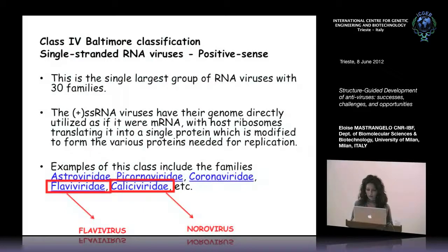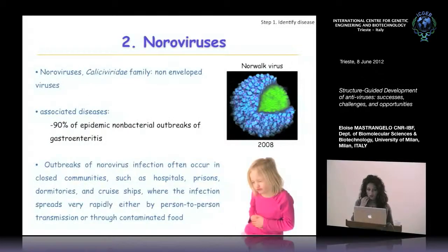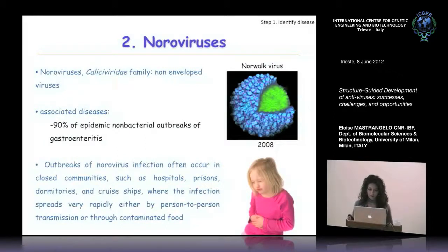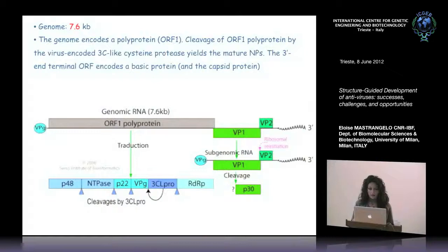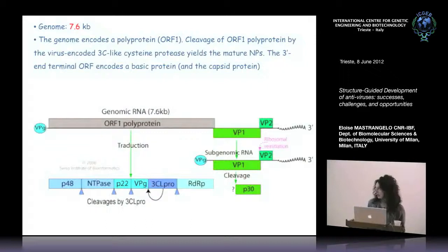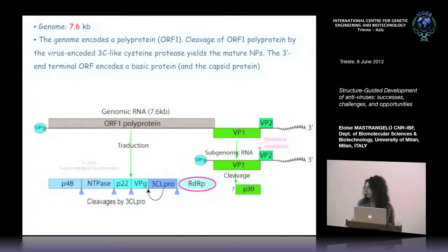The second part of my talk is about Noroviruses. Noroviruses are non-enveloped viruses responsible for 19% of epidemic non-bacterial outbreaks of gastroenteritis. Infection occurs in closed communities such as hospitals, cruise ships, and dormitories, and spreads rapidly person-to-person and through contaminated food. The genome spans about 7.6 kilobases and is translated to a polyprotein, cleaved by the virus-encoded 3C-like protease to yield non-structural proteins, among which we decided to inhibit the polymerase domain.